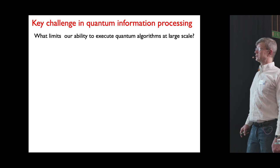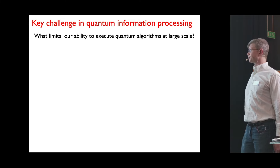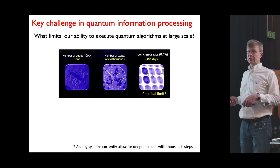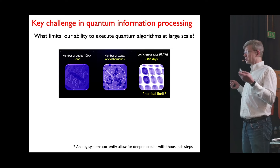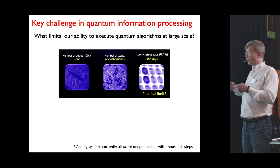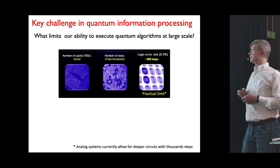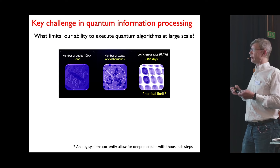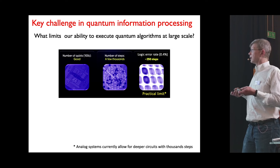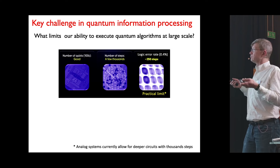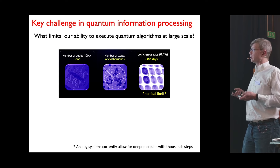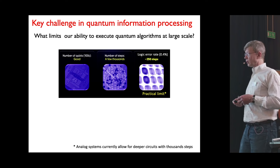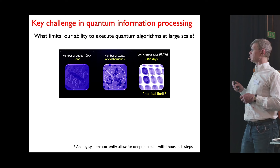We now have, in several platforms, systems of hundreds and thousands of qubits, which is a good number. You can make a number of steps of computation, but the problem is that with any realistic error rate, the number of steps you can make without errors will always be limited. State-of-the-art systems with error rates of maybe a fraction of a percent can make a few hundred to a thousand steps. Analog systems currently probably allow for the deepest circuits compared to digital approaches.